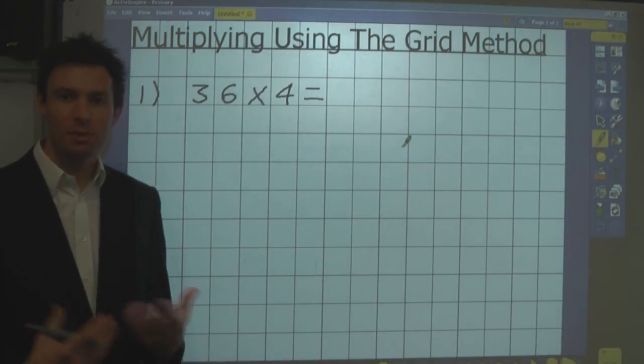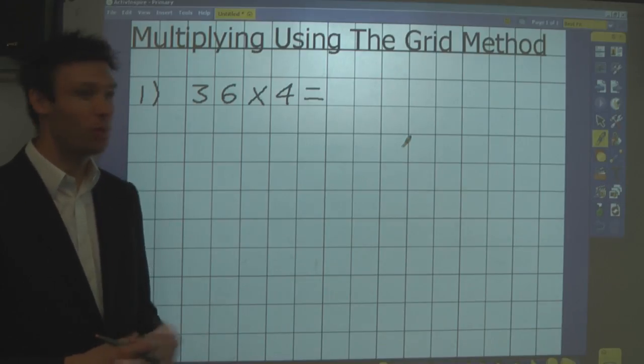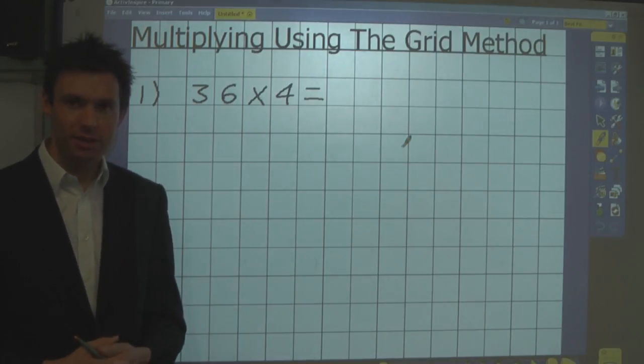Once children have learned their times tables and they know how to multiply by ten, a hundred, and a thousand, they can then start to solve questions like this: 36 times 4.